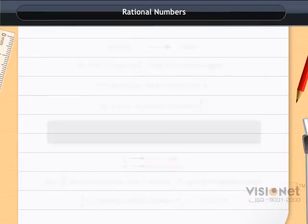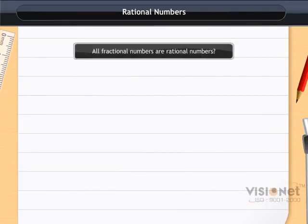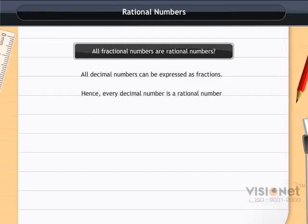We can now say that all fractional numbers are rational numbers. All decimal numbers can be expressed as fractions. Hence, every decimal number is a rational number.